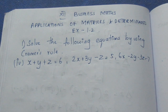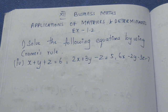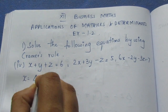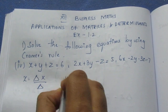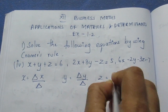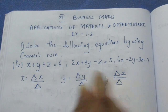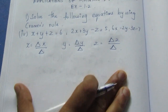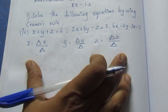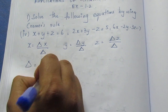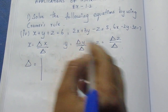Solve the following equation by using Cramer's rule. In Cramer's rule, we use delta x by delta, delta y by delta, and delta z by delta. Delta is also called the determinant. Using the determinant value, we can solve for x, y, z from the coefficients.